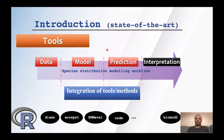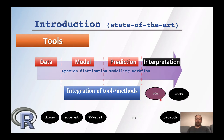Biomod was one of the first packages to try to integrate these tools together and enable a user to run the whole workflow for species distribution modeling. There are newer packages also developed in recent years. SDM is also such a platform with the same goal, and it works with other packages — for example, USDM is another package I developed that can be used together with SDM. In the next slides I'll discuss the key capabilities of SDM and some unique features.